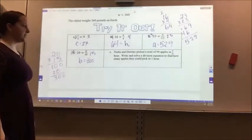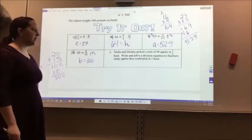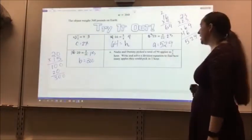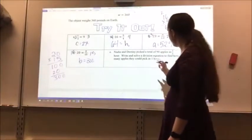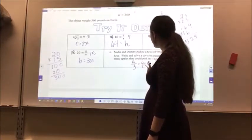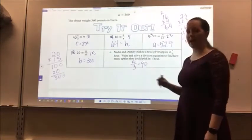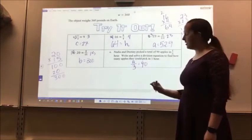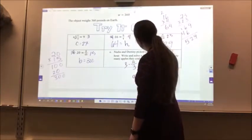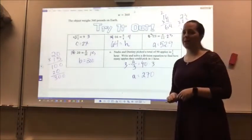For letter E, Nadia and Destiny picked a total of 90 apples in a third of an hour. Write and solve a division equation to find how many apples they could pick in one hour. I'm going to let A represent my apples. So A divided by 3 is 90, because that's the apples they picked in a third of an hour. Multiply both sides by 3. So A equals 270. Nadia and Destiny can pick 270 apples in one hour.